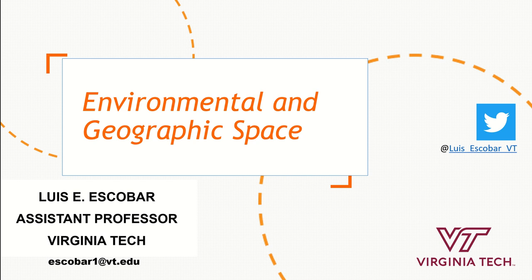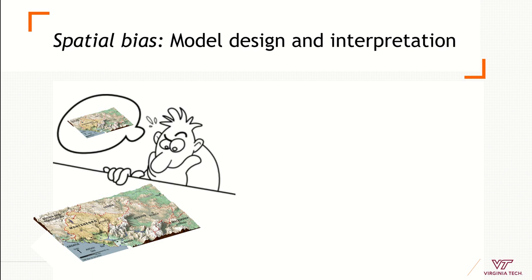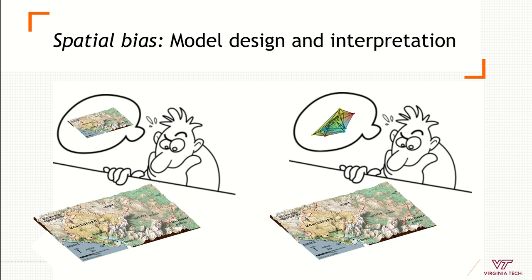Generally when we are mapping diseases, we have a spatial bias where we design our studies and make interpretations of our models in terms of maps — in a geographic or spatial dimension. We think in terms of what is there at our coordinates and how species occur in their geographic distribution.